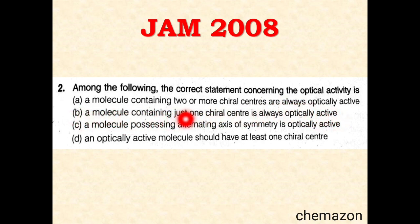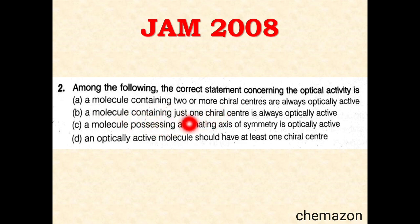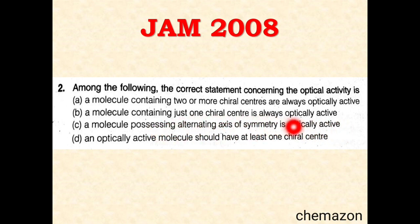Option B — a molecule containing just one chiral center is always optically active — this is very true. One chiral center is always going to be optically active. Option C — a molecule possessing an alternating axis of symmetry is optically active — no. Any axis of symmetry, whether alternating or a center of symmetry, will make the molecule optically inactive.